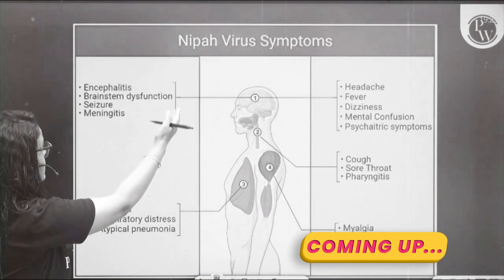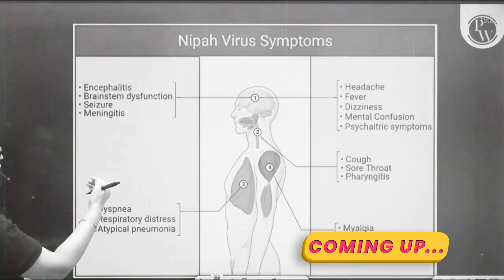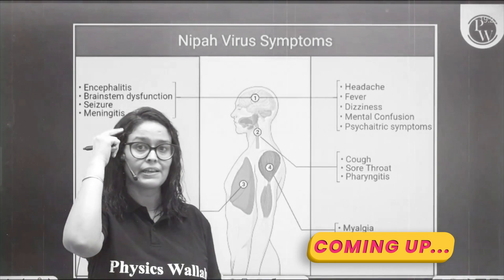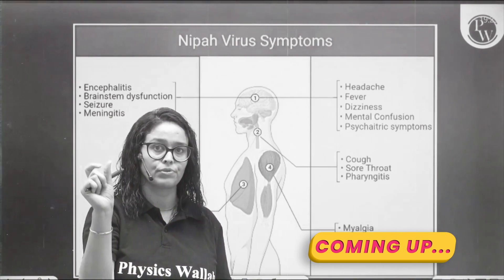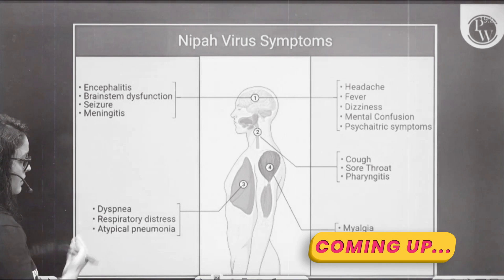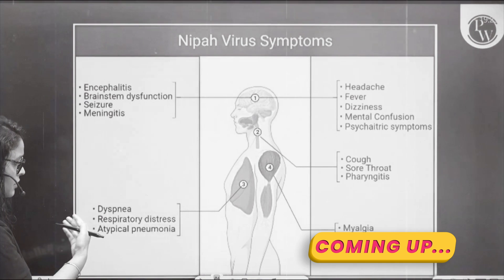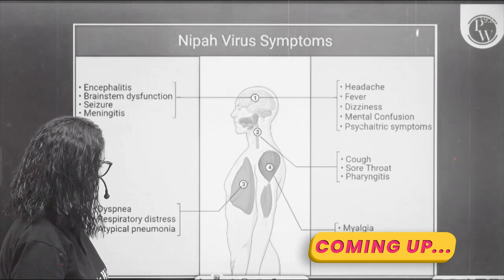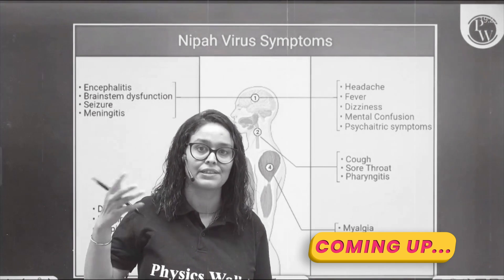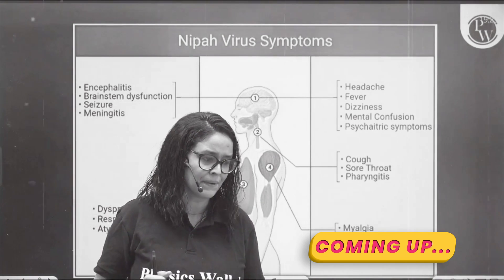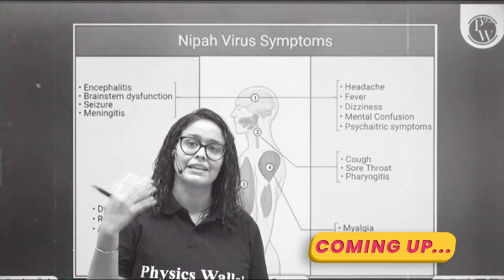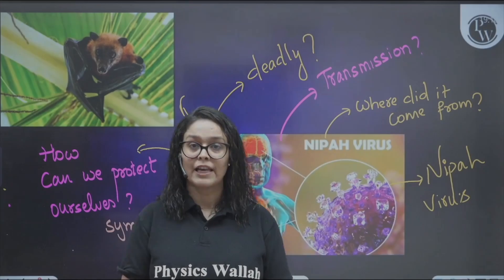Nipah virus infects the brain causing conditions like meningitis — inflammation of the meninges, the cover of the brain. It also causes dyspnea, respiratory distress, and atypical pneumonia, generally caused by bacteria or viruses that are not the typical reason for pneumonia, leading to significant respiratory distress.